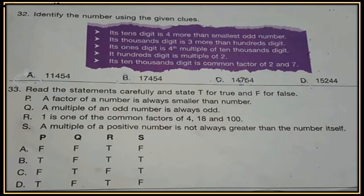Question 32. Identify the number using the given clues. Its 10s digit is 4 more than the smallest odd number. Its 1000s digit is 3 more than the 100s digit. Its 1s digit is the 4th multiple of the 10,000s digit. Its 100s digit is a multiple of 2. Its 10,000s digit is a common factor of 2 and 7. Five conditions are given; identify the number on this basis. The solution is shown at the end of the video.